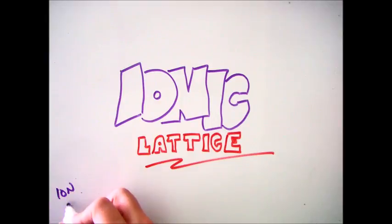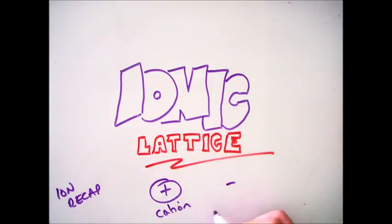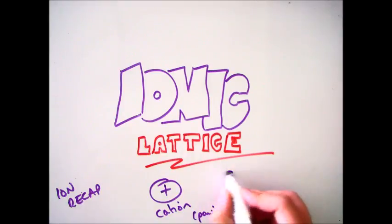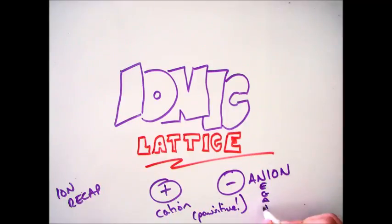So if we go into a bit of a recap. We know that an ion is a positively or negatively charged particle. If it's positive, it's a cation. If it's negative, it's an anion, a negative ion.